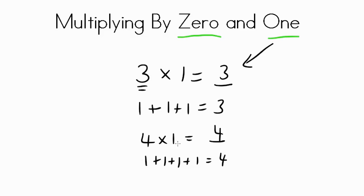So whenever multiplying by 1, the answer is the number you multiplied 1 by.